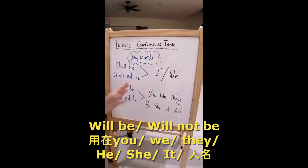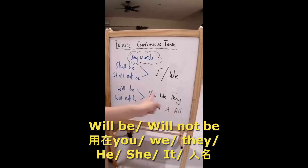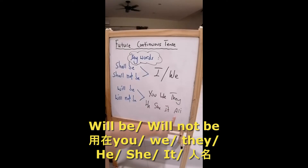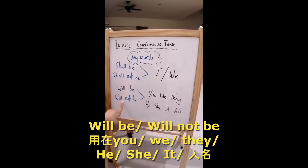It is the same like future tense. You, we, they, he, she, or a person's name — we use 'will be' or 'will not be'.